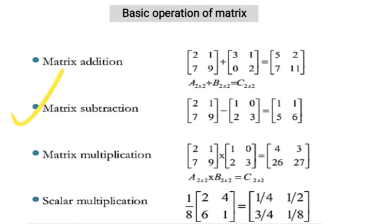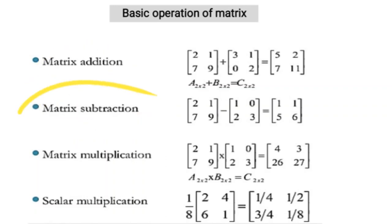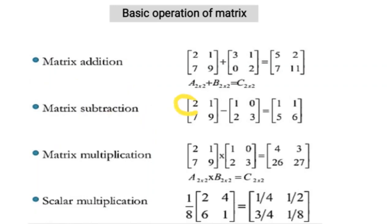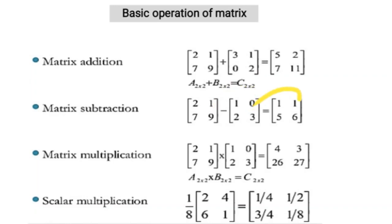This is matrix subtraction. Just like matrix addition, matrix subtraction is also very easy. The first element of the first row of the first matrix is subtracted from the first element of the second matrix: 2 minus 1 equals 1. The second element of the first row: 1 minus 0 equals 1.